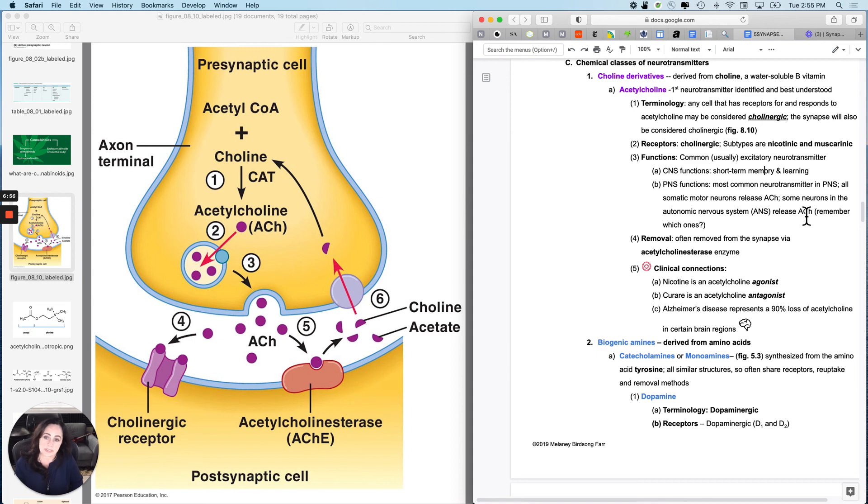And then Alzheimer's disease, there's a portion of the brain that uses acetylcholine for short-term memory formation. And one of the things that happens in Alzheimer's, not the only thing that happens in Alzheimer's, is that portion of the brain loses about 90% of the acetylcholine that it would have in a healthy person. So, all of those are clinical connections related to acetylcholine.